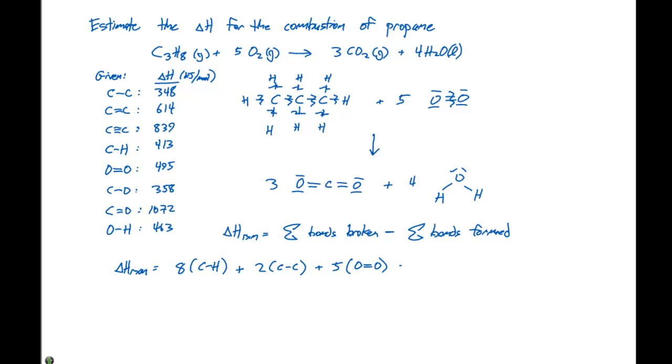Then looking at the bonds that are formed, we have 6 total carbon-oxygen double bonds (3 on each CO2) plus 4 water molecules with 2 oxygen-hydrogen bonds each, giving us 8 oxygen-hydrogen bonds total.